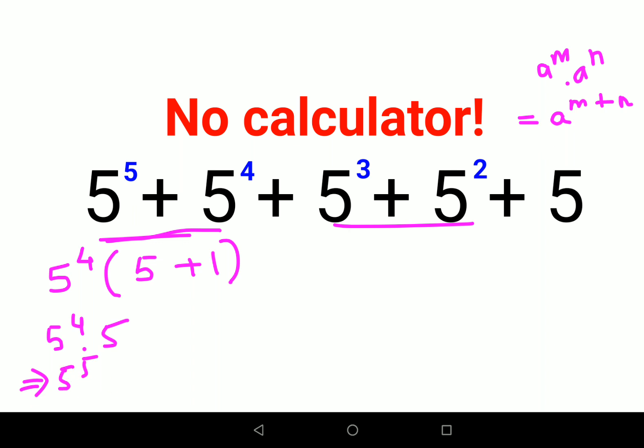I hope this is very clear to everyone. Similarly here, we will take 5 raised to 2 common, and I'm left with 5 plus 1, and I'll keep this 5 as it is.